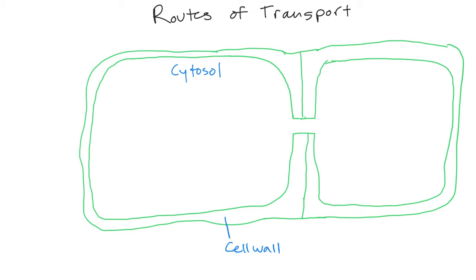When substances pass through or go from one cell to the next, they can go by different routes. Another label for the inside of the cell is called the symplast, and for the outside of the cell — the cell wall — it's called the apoplast.